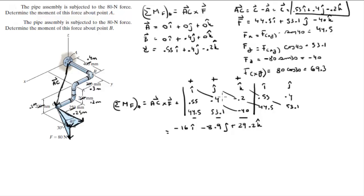And now you do your negative diagonals. Negative 44.5 times 0.4 times k is negative 17.8 in the k. Negative 53.1 times negative 0.2 times i is positive 10.6 i. And negative negative 40 times 0.55 times j is positive 22 j.